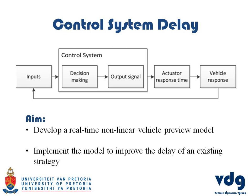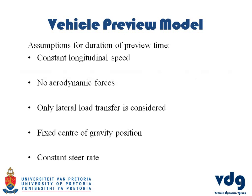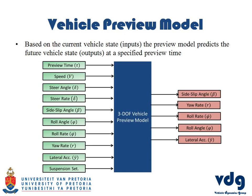The aim is to develop a vehicle preview model and implement it on an existing strategy to see if we can improve it. The preview model makes the following assumptions: constant longitudinal speed, no aerodynamic forces, only lateral load transfer is considered, fixed center of gravity position, and constant steer rate for the entire preview time. The preview time is user-defined, and the model uses the parameters on the left-hand side as inputs to predict the parameters on the right-hand side.